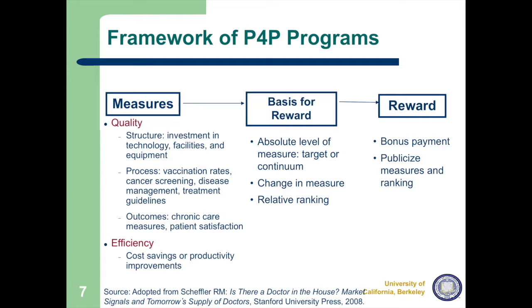If you can absorb this framework, you will become an instant expert in pay for performance. There are three elements: measures — what do you measure; the basis for the reward; and the reward itself. In order to do pay for performance and deal with quality or efficiency, you have to measure things, then reward them, and then decide what kind of rewards you're going to give people.